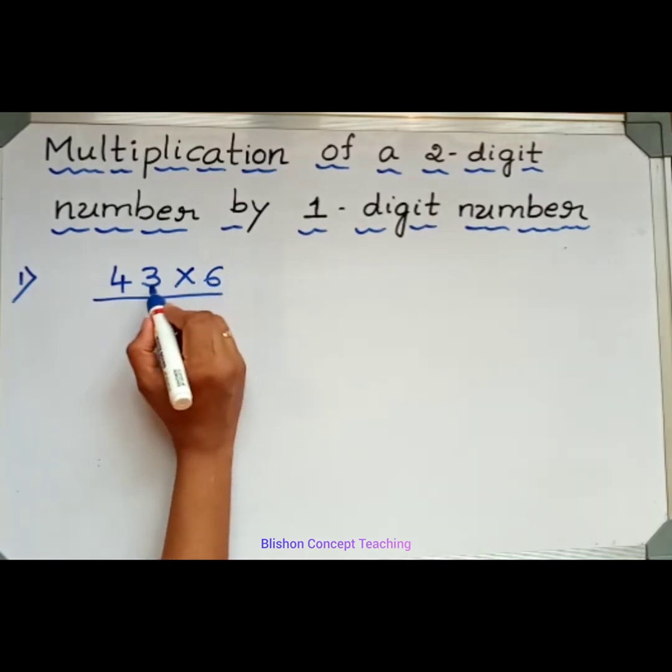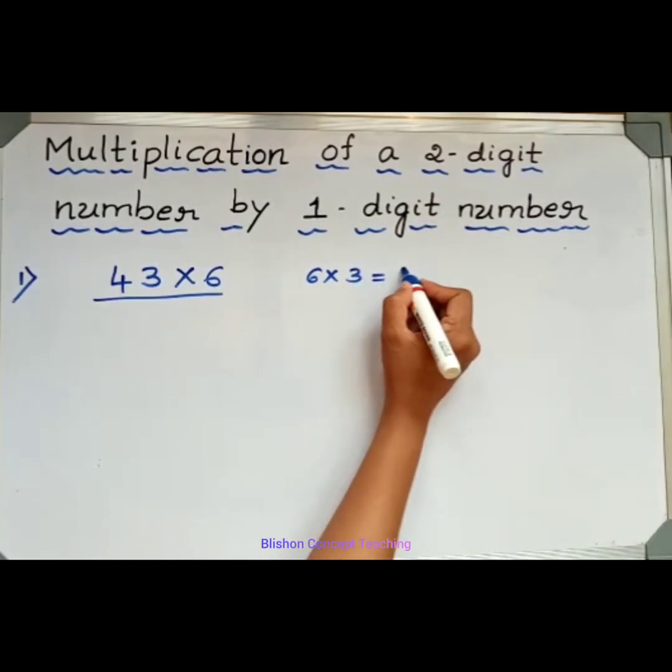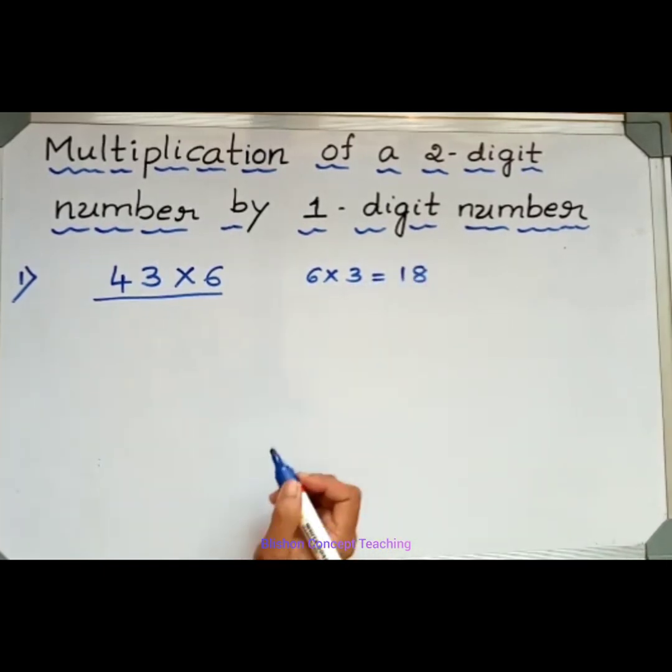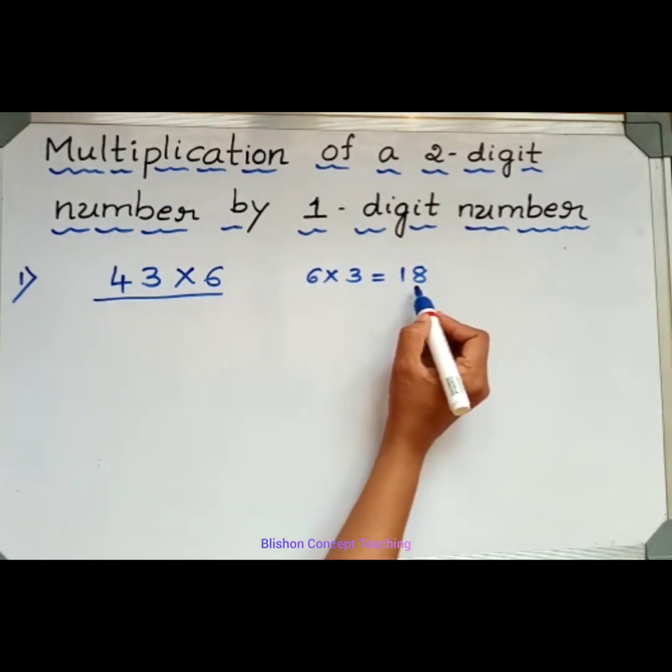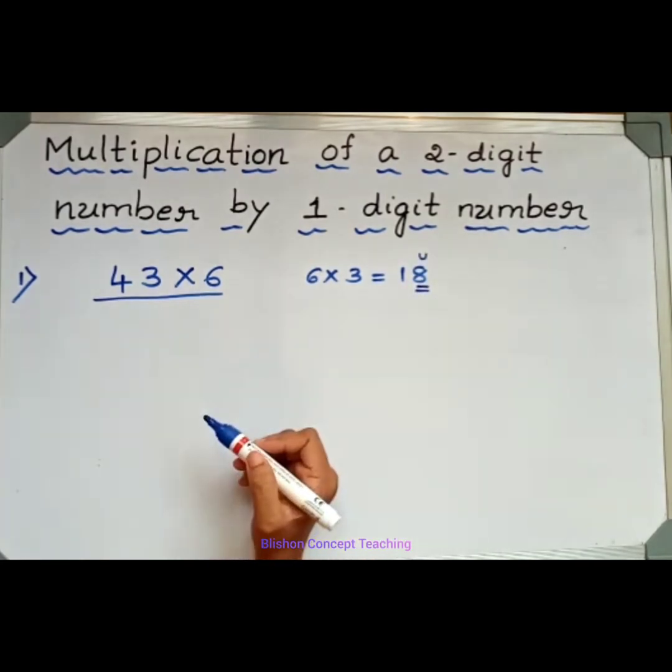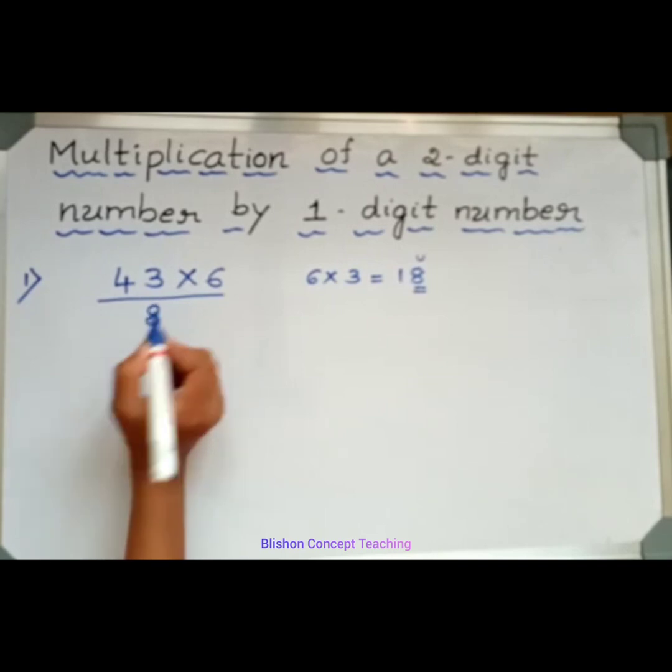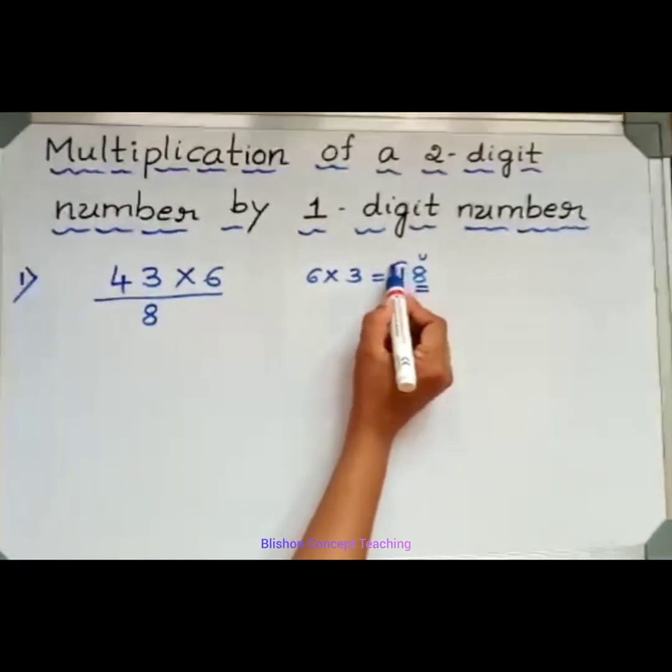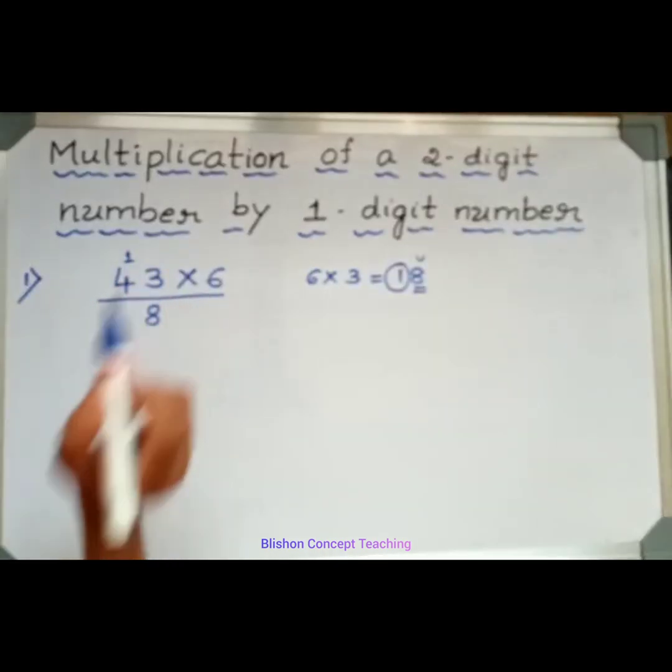6 times 3. How much? 18. Now, in this number, which number is in the unit place? 8 is in the unit place. So I will write 8 here. And this 1, I will take it as carryover.